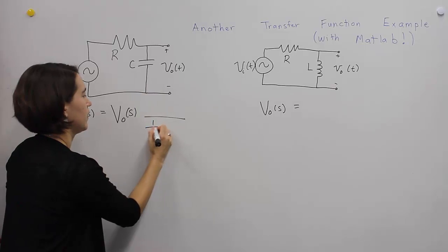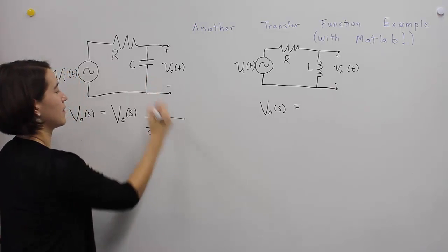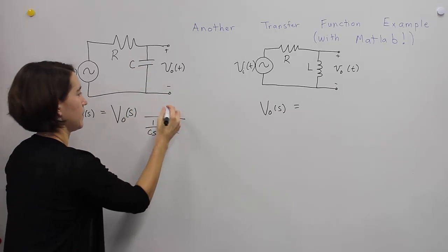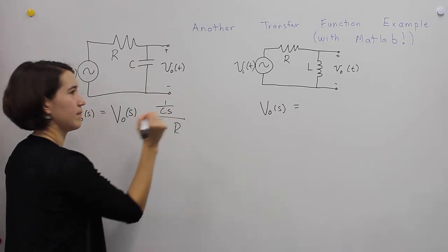And like before, 1 over Cs, the impedance of this, plus R, the impedance of that, over the impedance here, 1 over Cs.